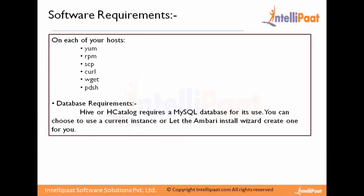For software requirements, before proceeding you need yum, rpm, scp, and curl. For database requirements, if you already have a database you can just integrate it with the Ambari server. If you don't, Ambari gives you the option to go with the default. If you have Hive or HCatalog, it requires a MySQL database, and you can choose to use an existing instance or use Ambari's default one.